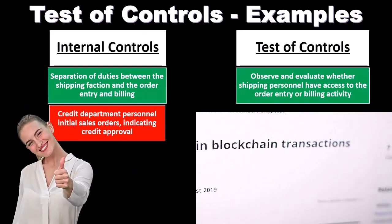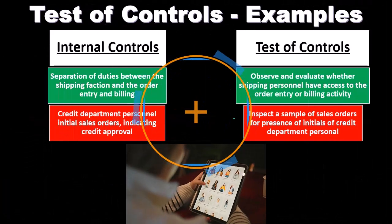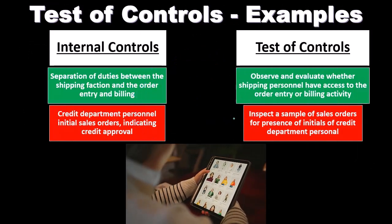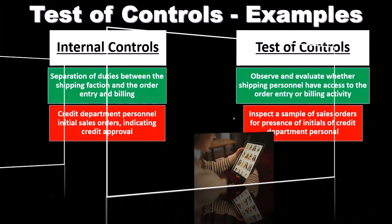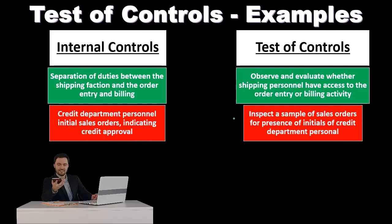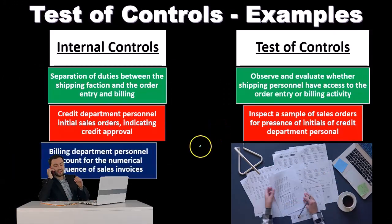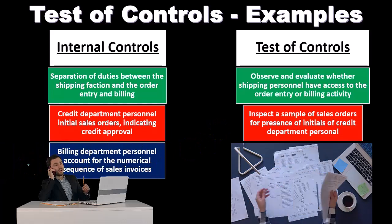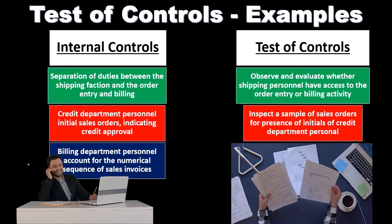Another example: credit department personnel must initial a sales order to indicate credit approval. We can inspect the sales orders for the presence of initials of credit department personnel. There will be a stamp or initials indicating that credit approval was given. We take a sample of sales orders and see if the initials are indeed there — confirming not only that the internal control is documented, but that they're actually following through with it.